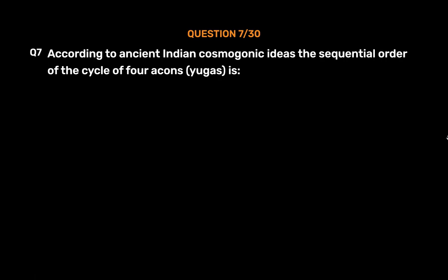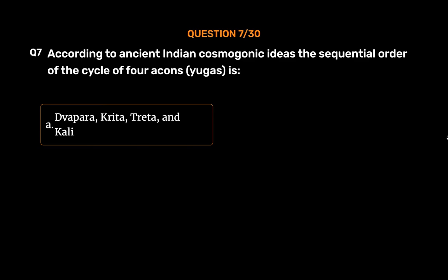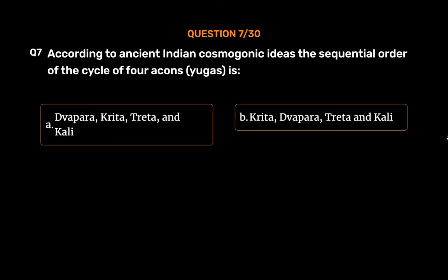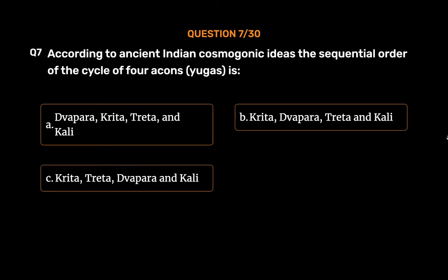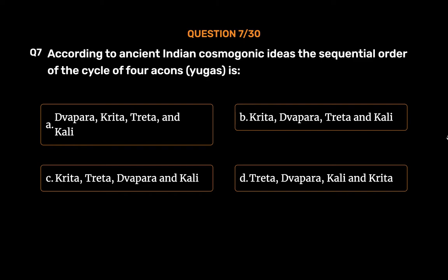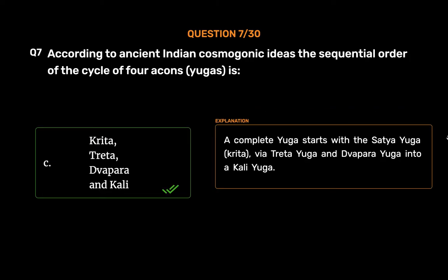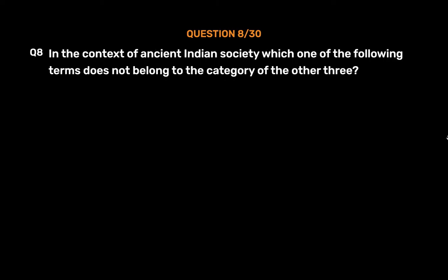Question number seven: According to ancient Indian cosmogonic ideas, the sequential order of the cycle of four Yugas is — Option A: Dvapara, Krita, Treta, and Kali; Option B: Krita, Dvapara, Treta, and Kali; Option C: Krita, Treta, Dvapara, and Kali; Option D: Treta, Dvapara, Kali, and Krita. The correct answer is Option C. A complete Yuga cycle starts with Satya Yuga (Krita), then Treta Yuga, then Dvapara Yuga, ending in Kali Yuga.